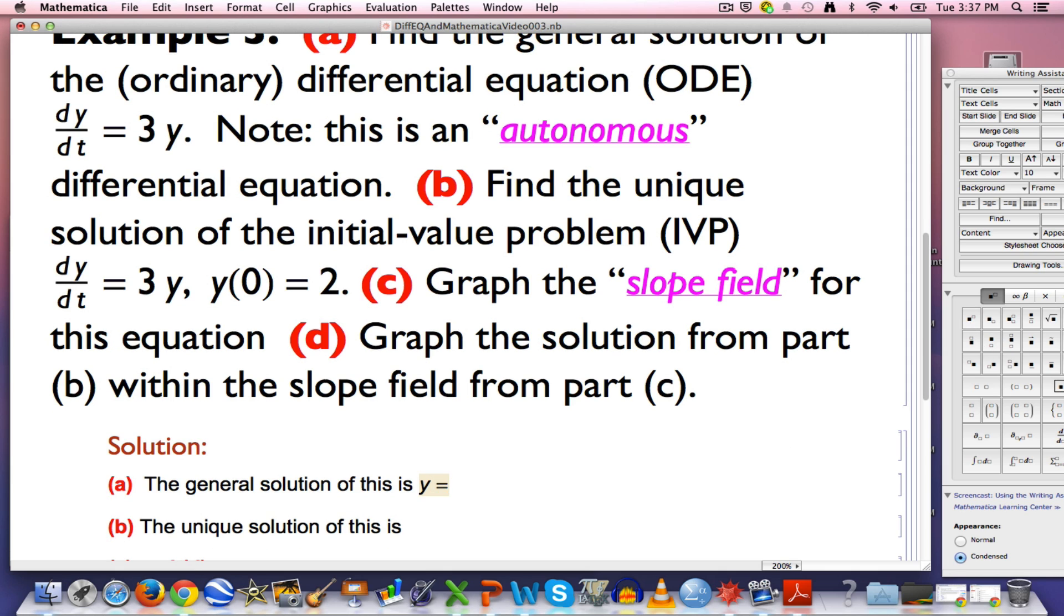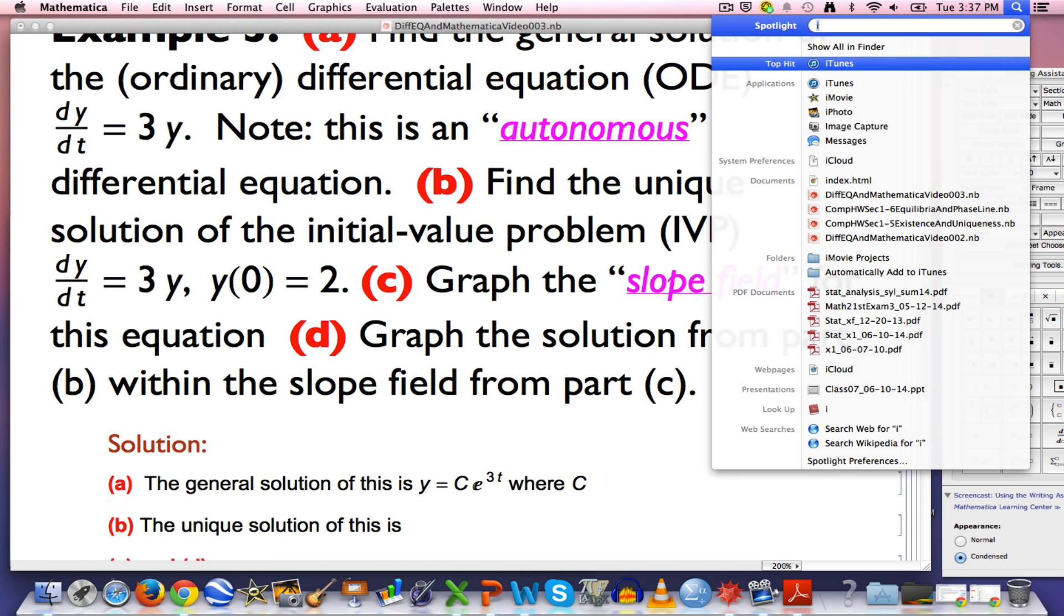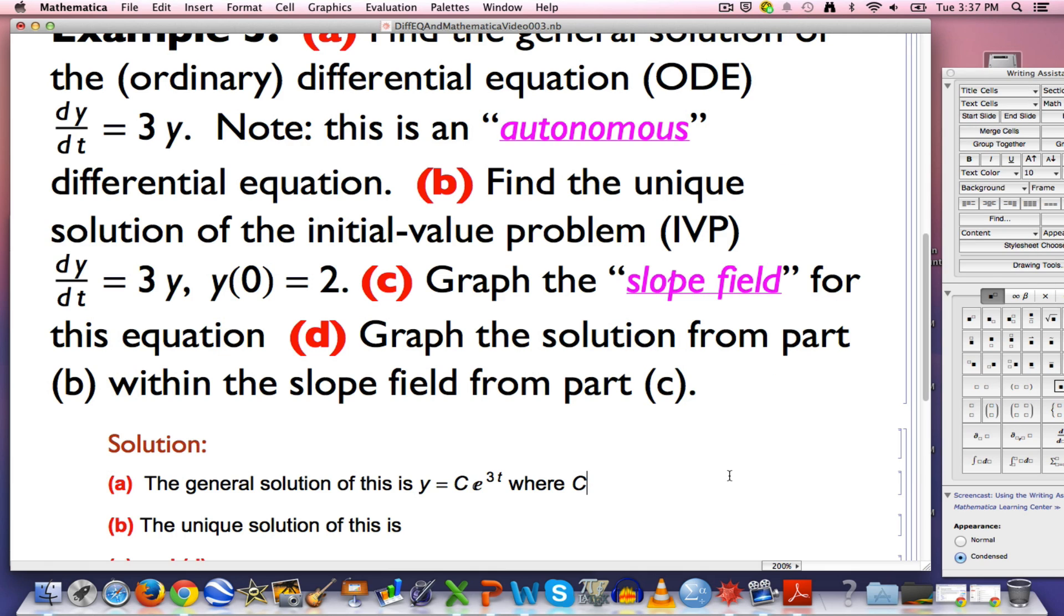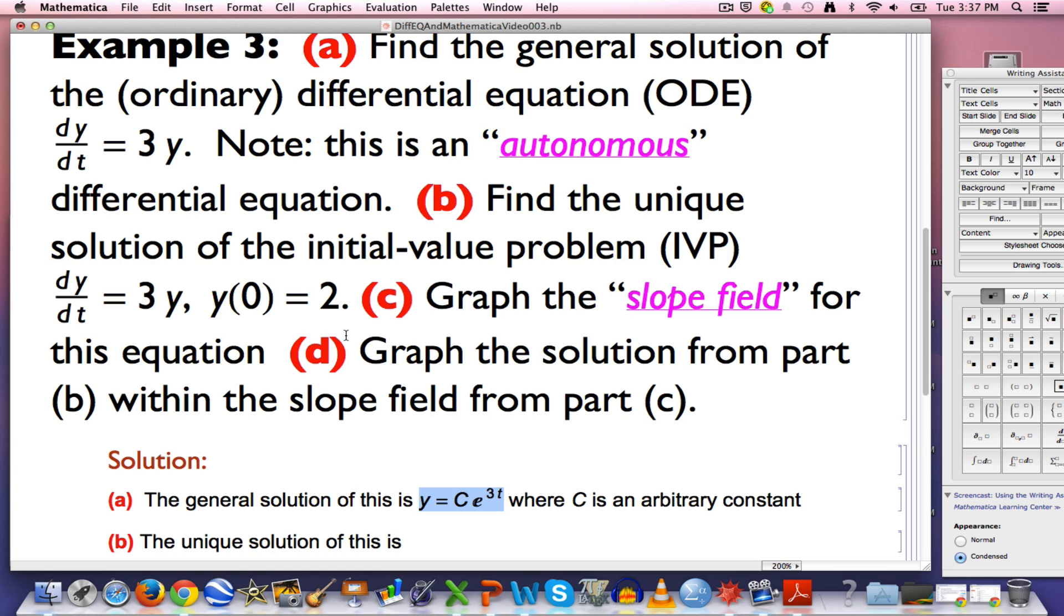If you are after the most general kind of function whose derivative is always 3 times itself, it is going to be an arbitrary constant c times e to the 3t power, where c is an arbitrary constant. Does that make sense? Hopefully it makes sense to you. It is because of the chain rule. When you take the derivative of this function, you will get an extra factor of 3 coming out from the derivative of the inside function being 3t. Its derivative is 3, so you are going to get 3 times c times e to the 3t when you differentiate this. 3 times the function itself. That is what it means to solve this differential equation in this case.